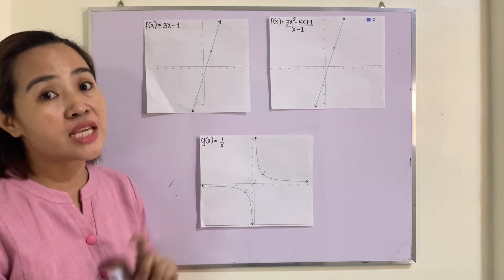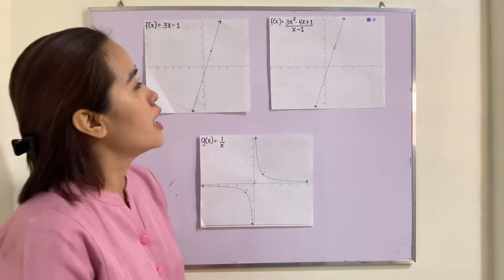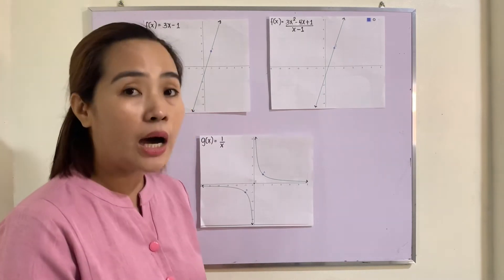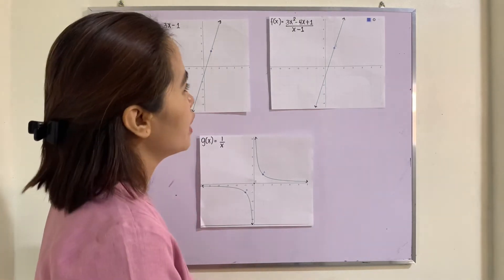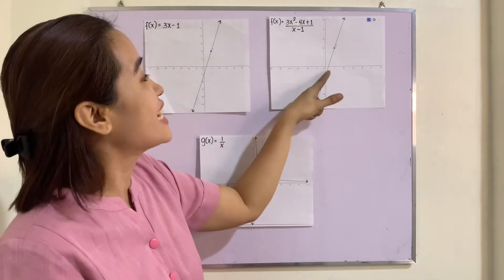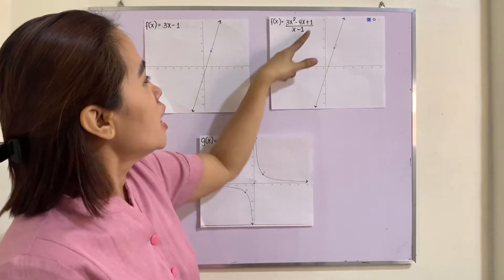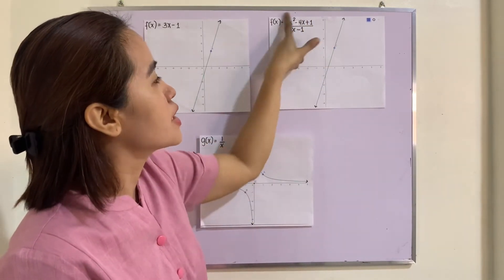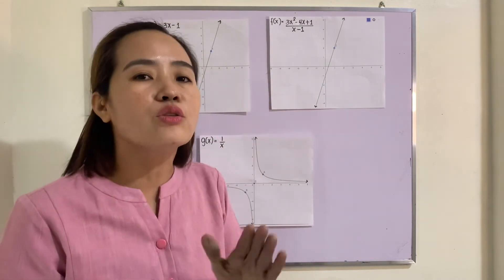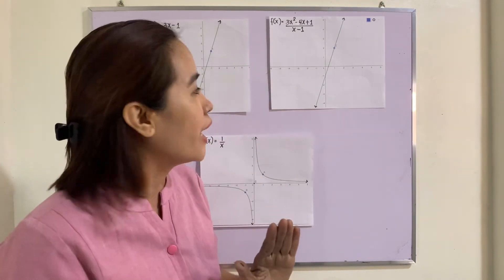What about the second? f(x) = (3x² - 4x + 1)/(x - 1). Is this function continuous at x = 1? Now if we trace this one, trace the graph of this, you cannot graph this without lifting your pen because there is a hole here.